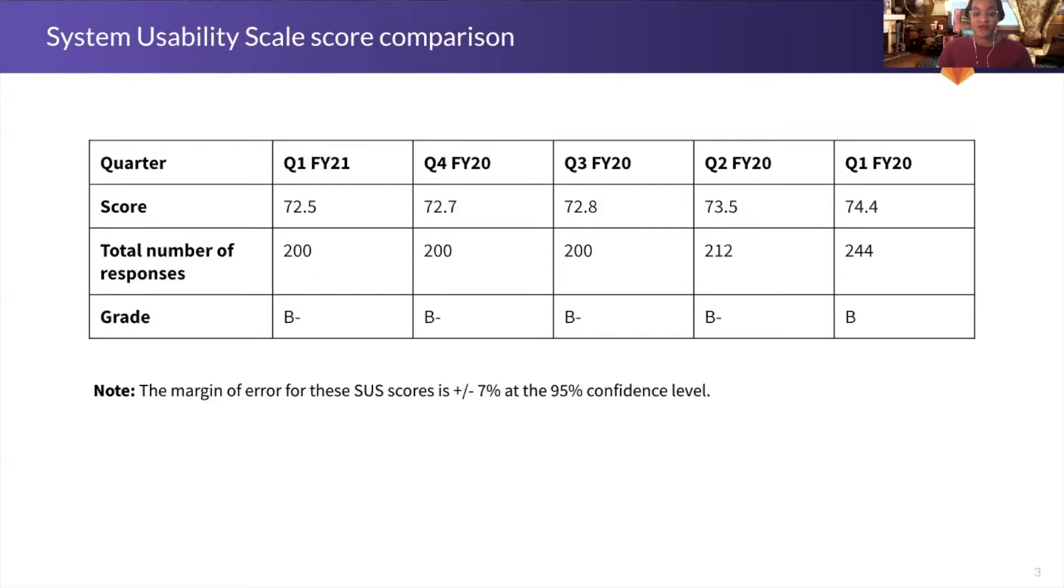Just to give you some context, the industry average score for the SUS is 68 across various companies, and scores above 68 are considered good but in need of improvement.